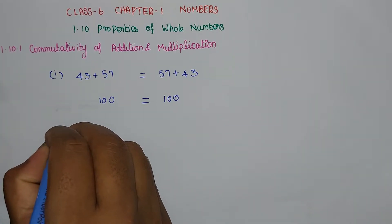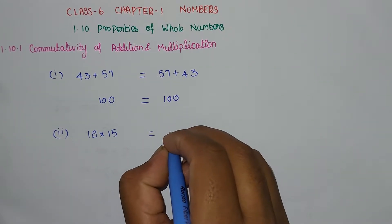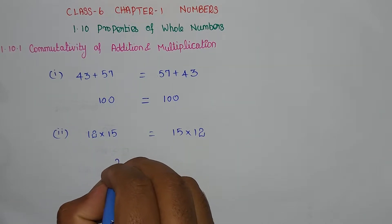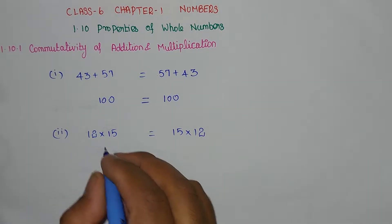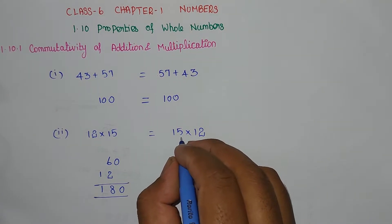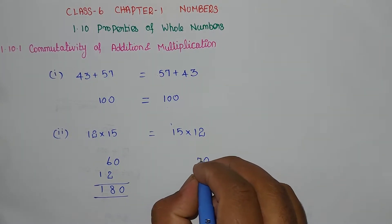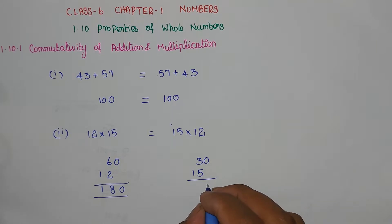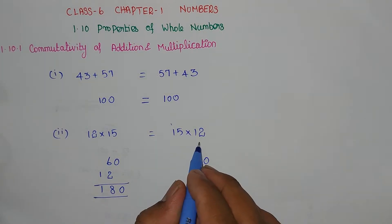This is the second problem — multiplication. 15 into 12 equals 12 into 15. Multiplying 15 by 12: 2 fives are 10, carry 1; 2 ones are 2, plus 1 is 3; so 30. Then 1 times 15 is 15. Adding: 30 plus 150 gives 180. Similarly 12 into 15 also gives 180.